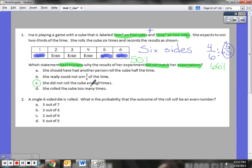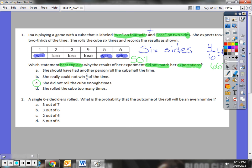Take a look at the next one. A single six-sided die is rolled. What is the probability that the outcome of the roll will be an even number? I'm going to go back here, highlight, underline some key words here. Six-sided die, so that means it's just one, is rolled. What is the probability that the outcome of the roll will be an even number? So, I have six sides.